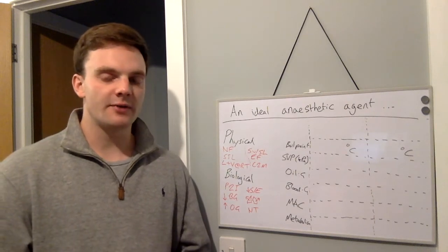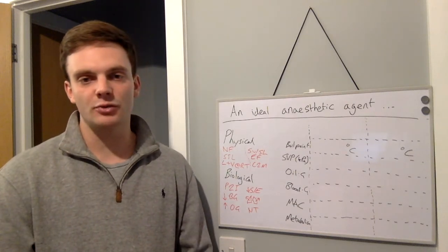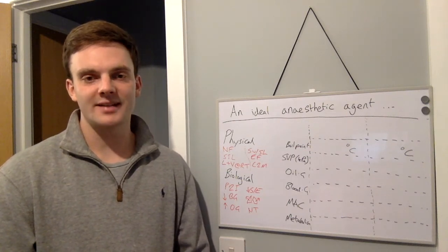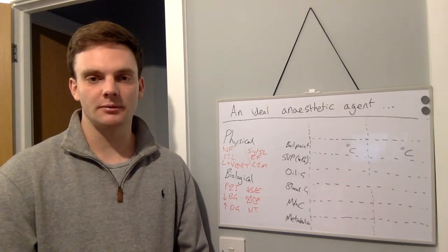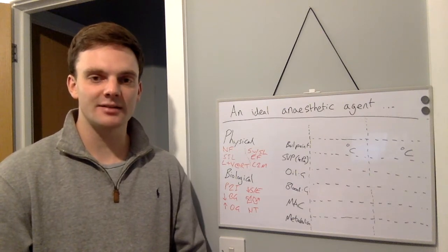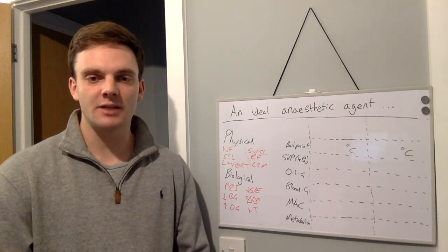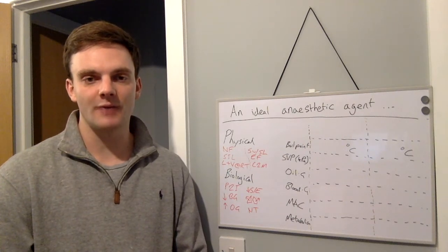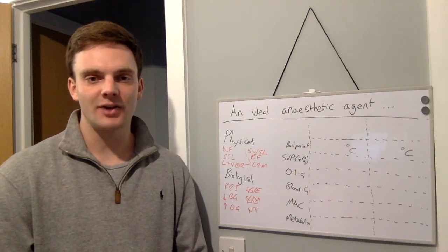So firstly, if we start with physical properties that are ideal as an anaesthetic agent, we want an anaesthetic agent to be non-flammable, stable in light, liquid and vaporisable at room temperature, stable with soda lime, environmentally friendly and cheap to manufacture.